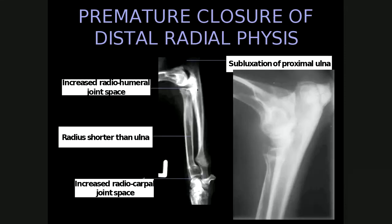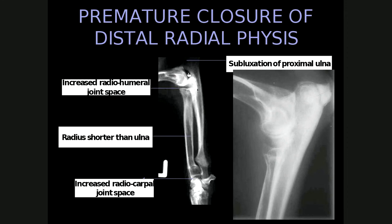When the distal radial physis closes instead, the appearance is quite different. The ulna continues growing while the radius remains straight and upright, with increased joint space proximally between the radius and the humerus and increased joint space distally in the radiocarpal joints. As the ulna keeps growing, there will be subluxation proximally and widening of the proximal humeroulnar joint space. This demonstrates a marked increase in the humeroradial joint space because the radius has stopped growing.